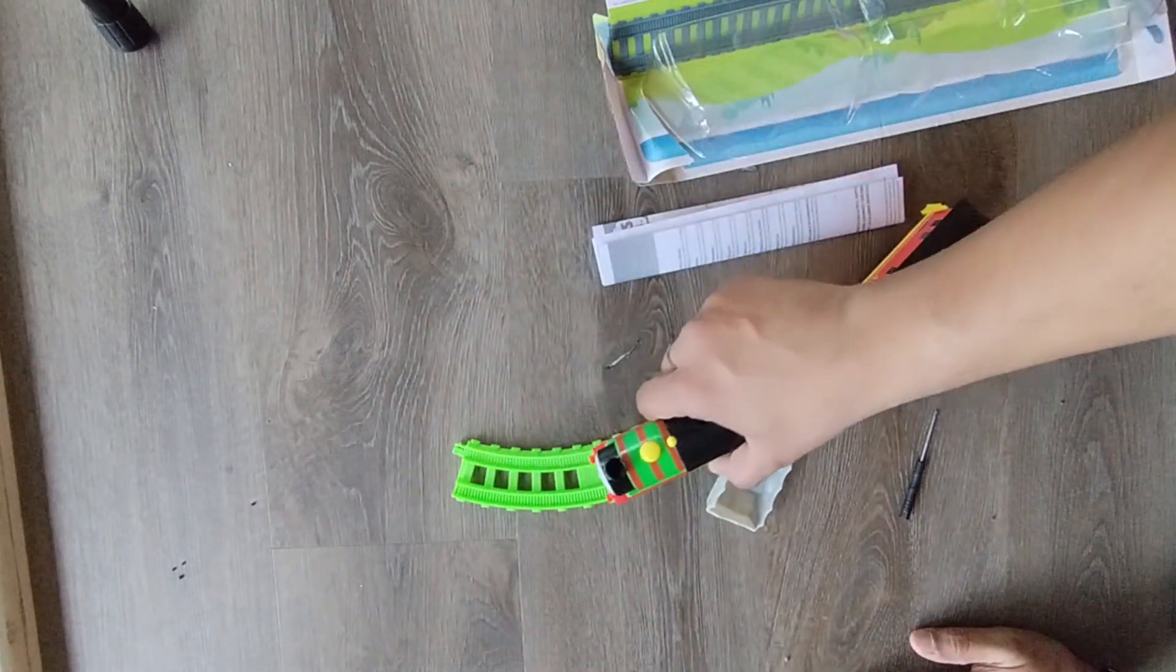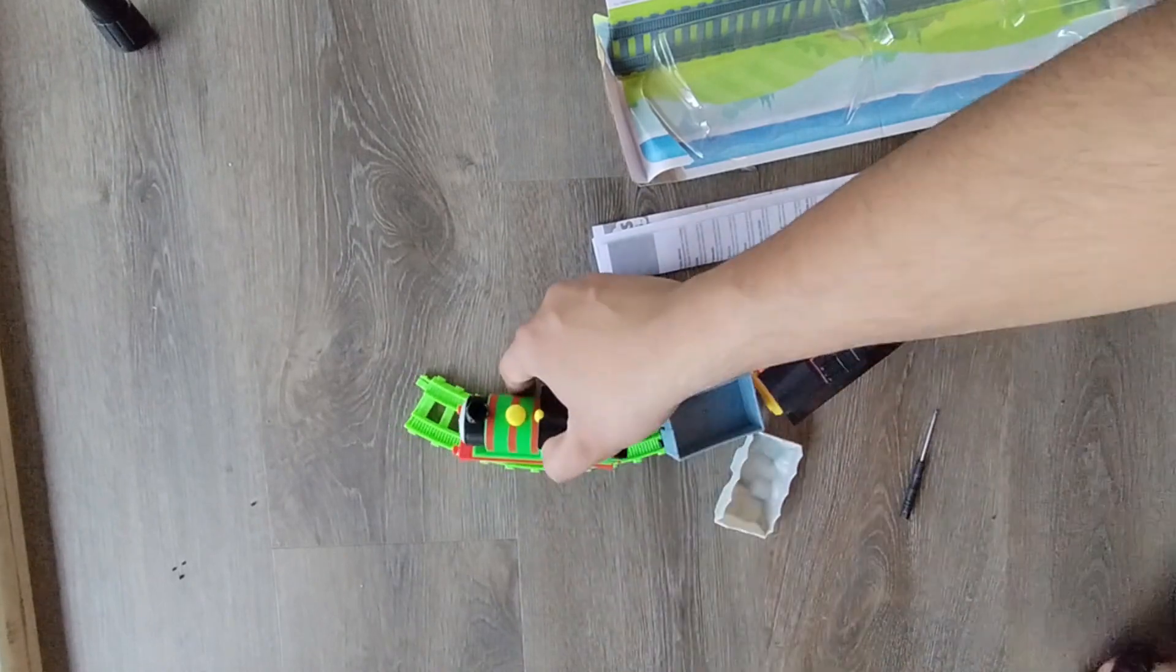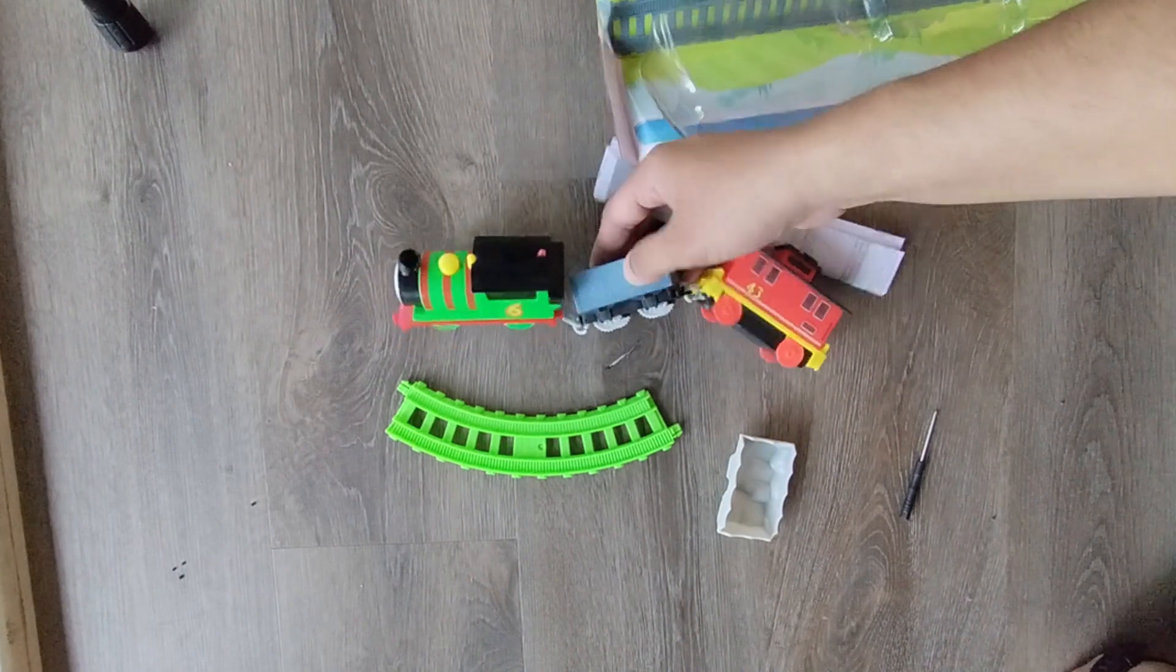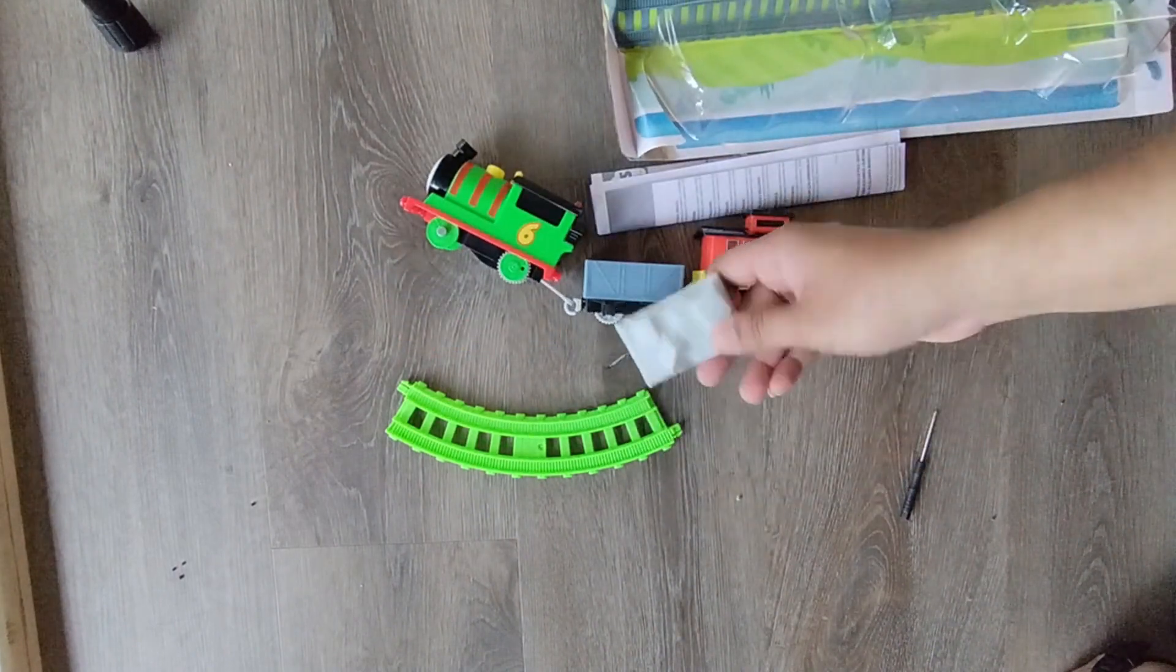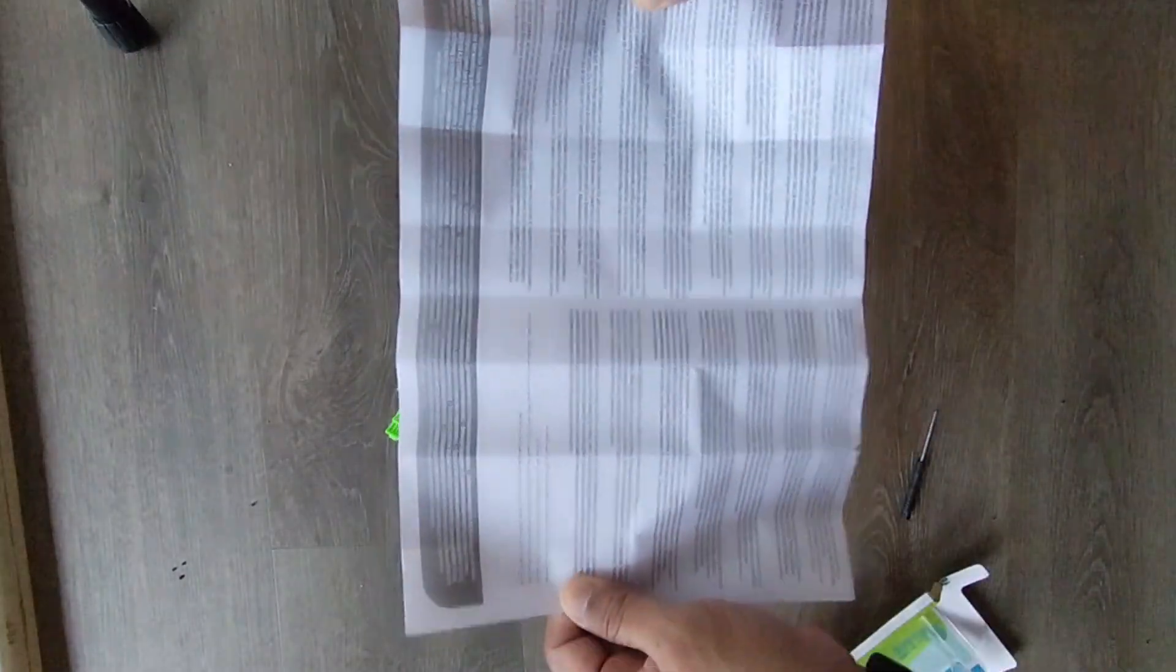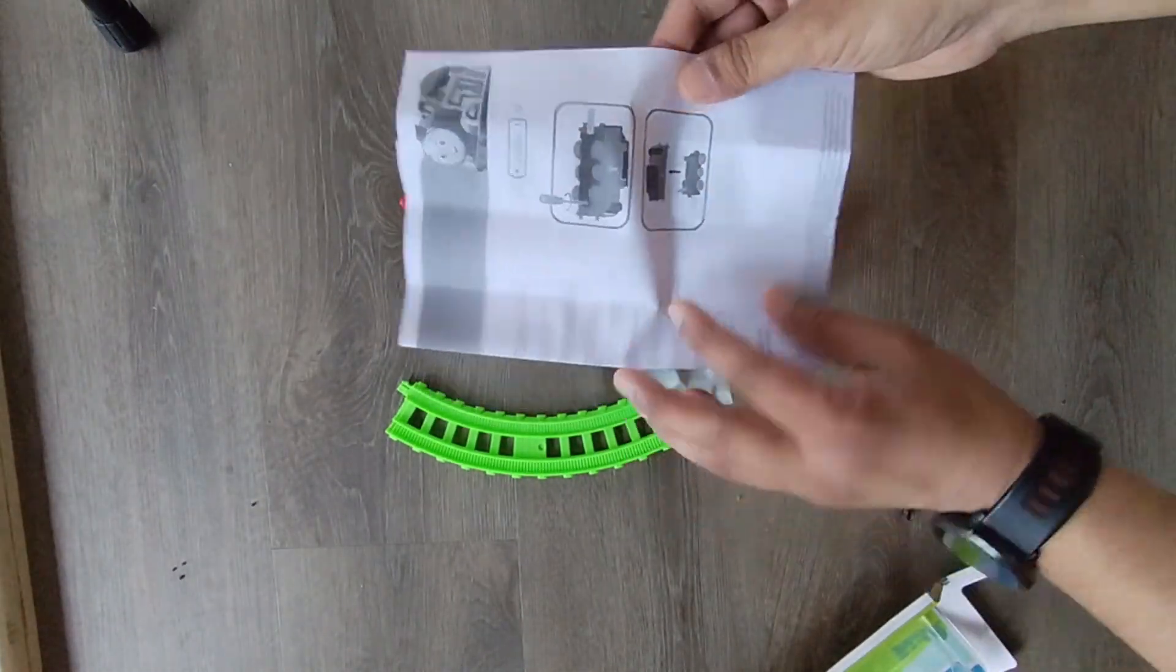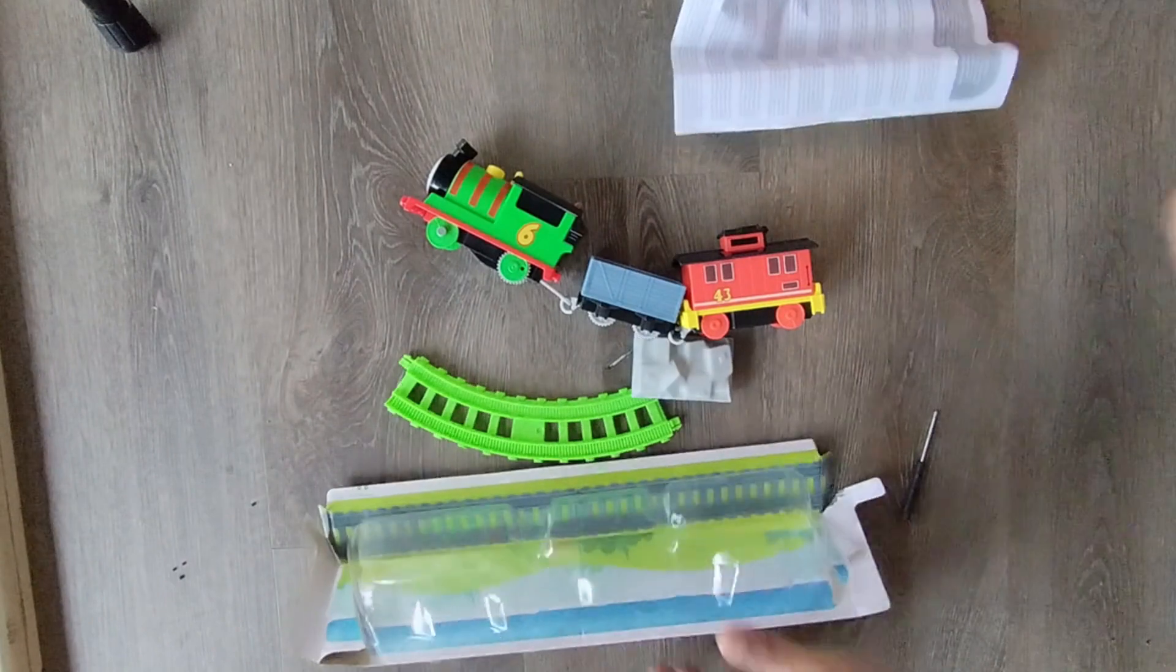In conclusion, the Thomas & Friends motorized toy train Percy battery-powered engine and brake car Bruno rail vehicle offers an engaging and interactive play experience for young fans of the series. The motorized feature and attention to detail in the design are commendable. However, there may be limitations in terms of power on inclines, battery life, and compatibility with non-Thomas & Friends track sets. Overall, if your child is a Thomas & Friends enthusiast and enjoys motorized play, this toy train can be a worthwhile addition to their collection.